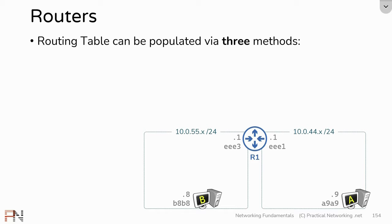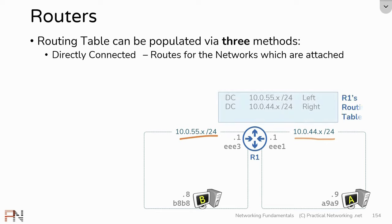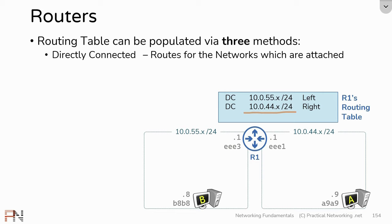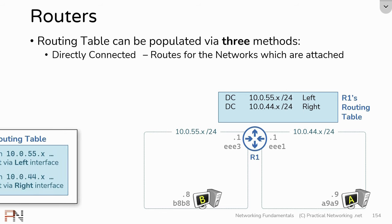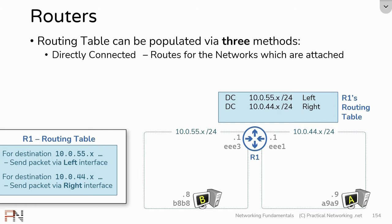There are three ways that routes can be populated in a routing table. The first method is what's known as directly connected. A directly connected route exists for every network that a router is directly attached to. In the case of R1, R1 is directly connected to two different networks, and therefore will have two different directly connected routes in its routing table — the first telling R1 that the 10.0.55 network exists out the left interface, and the second telling R1 that the 10.0.44 network exists out the right interface.